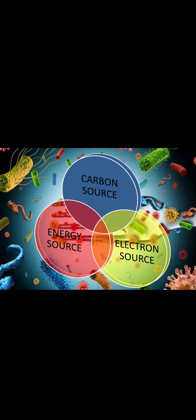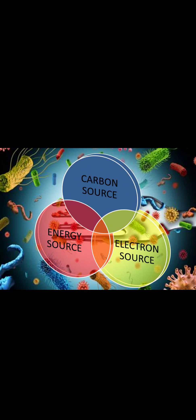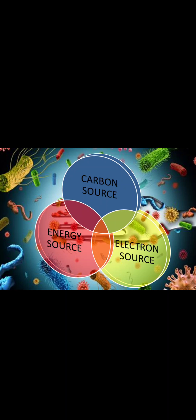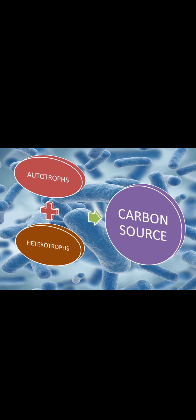There are different parameters based on which microorganisms can be classified. Not all microorganisms require all the same nutrients; some groups are specific to one kind of nutrient. The three parameters we consider for nutritional classification of microorganisms are: carbon source, energy source, and electron source.